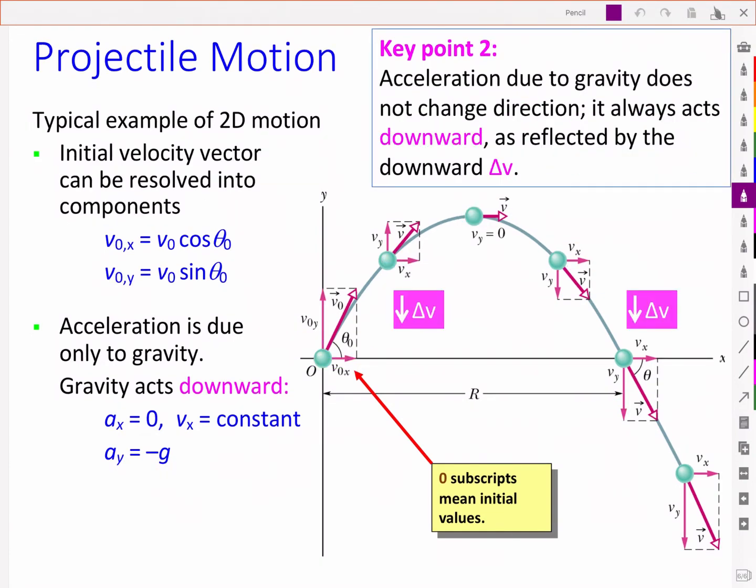A second key point is to notice that, like we saw in last week's lesson, the acceleration due to gravity does not change direction. It always acts downward as shown by the delta V. That is acceleration, the change in velocity per unit time.